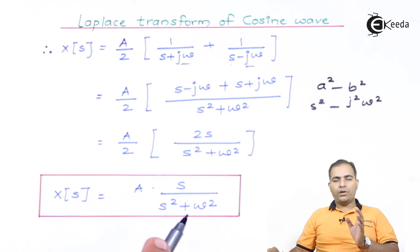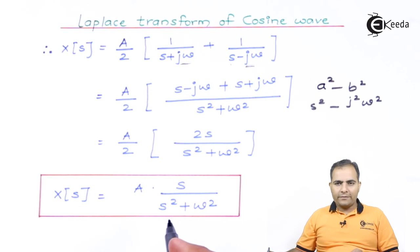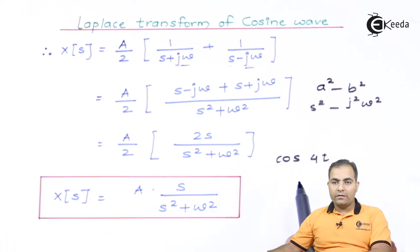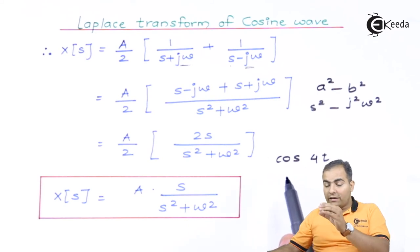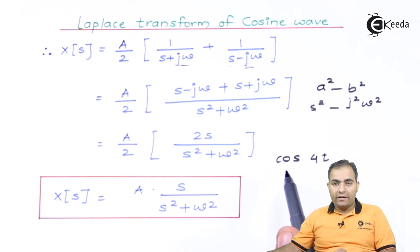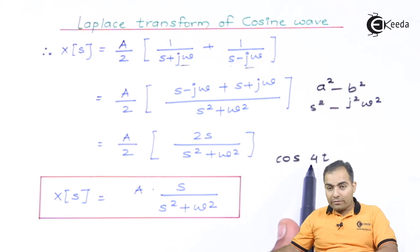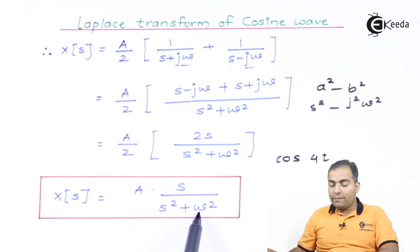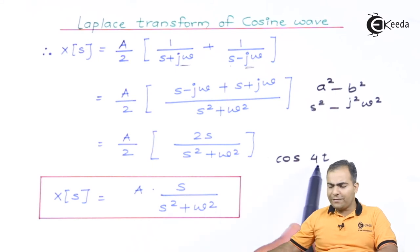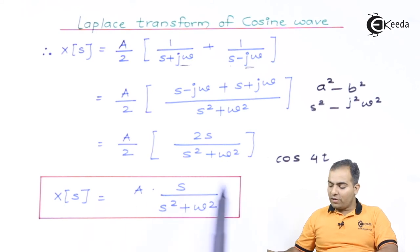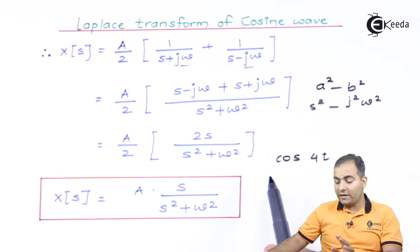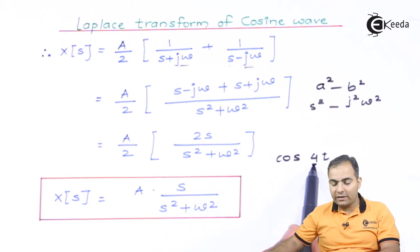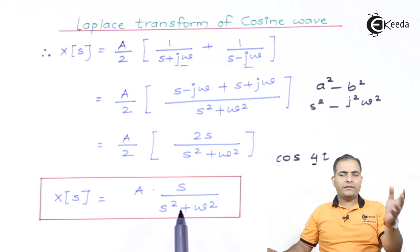This is the transformation of the cos wave into the Laplace domain. For example, if we have A·cos(4t), compare with A·cos(ωt) — here ω = 4. Substituting gives A·s / (s² + 16). Similarly, if ω = 3, substitute 3. Likewise, for any value of cos(ωt), simply replace the ω value and take its square to get the Laplace transform.